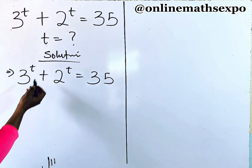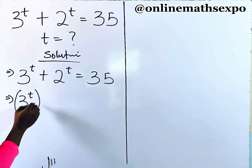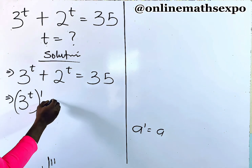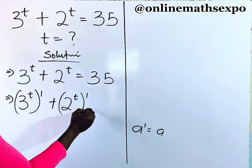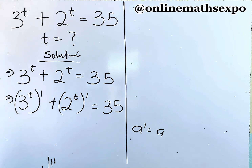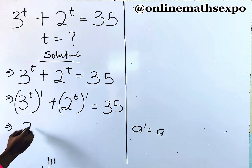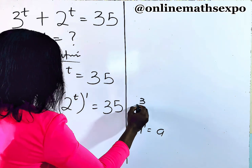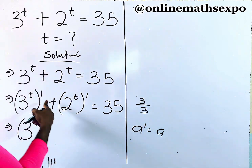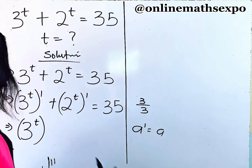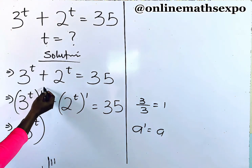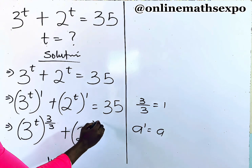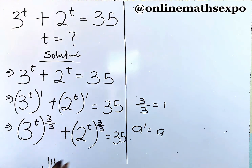We can rewrite this as 3 to the power of T raised to the power of 1, plus 2 to the power of T raised to the power of 1, equal to 35. For every number raised to the power of 1, it is the same number, so this has not changed anything. We can also rewrite the exponent 1 as 3 divided by 3, since any number divided by itself gives 1. So we replace 1 with 3/3: we have 3 to the power of T raised to the power of 3/3, plus 2 to the power of T raised to the power of 3/3, equal to 35.